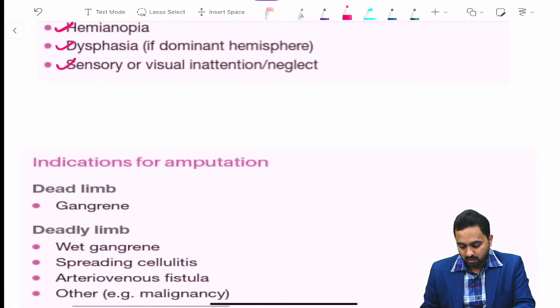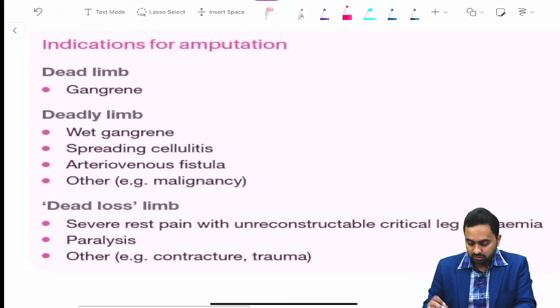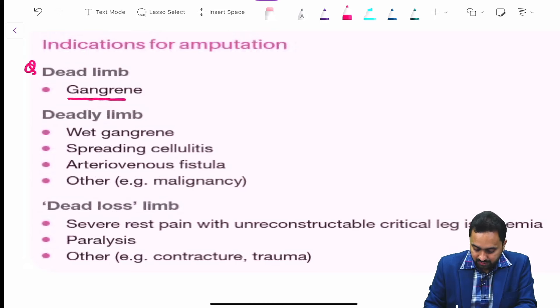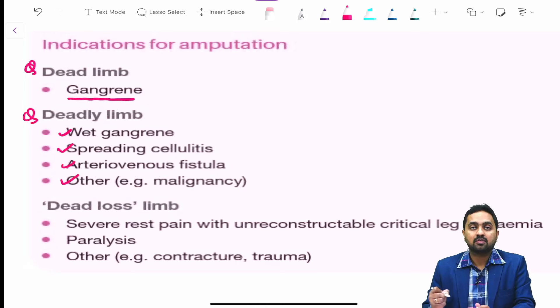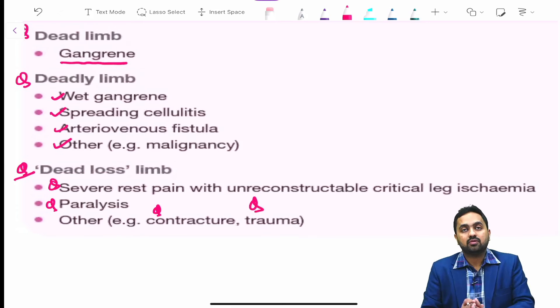Another important table regarding amputations. What are indications for amputation? Dead limb: gangrene. Deadly limb: wet gangrene, spreading cellulitis, arteriovenous fistula, malignancy. Dead loss limb: severe rest pain with unreconstructable critical limb ischemia, paralysis, and other causes like contracture or trauma. This is all regarding arterial disorders. Thank you.